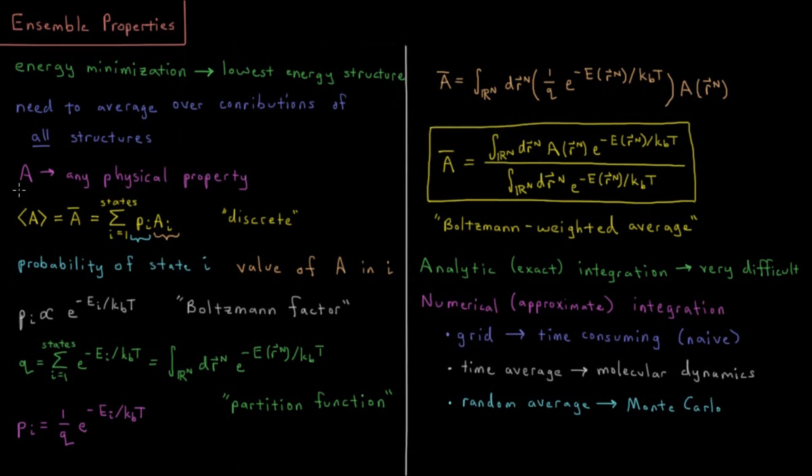Let's imagine we have some physical property here. A might be the energy, A might be some type of bond length, A might be the pressure or temperature of the system. Whatever it is, it's just some physical property of our system. And let's say we want to compute what we call the expectation value of the system, or the average value, or the mean value. That would be represented by either these brackets here, a notation you see a lot in quantum mechanics, or maybe this bar here, which you might see more in statistical mechanics or thermodynamics.